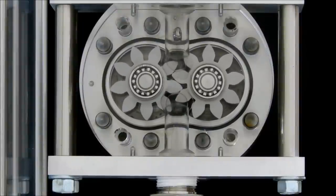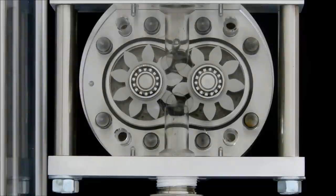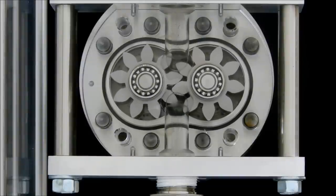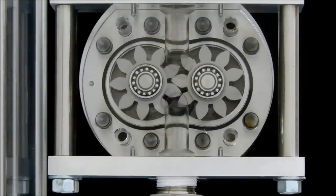As liquid continues to enter the meter, the trapped portion of fluid is carried along by the gears until the fluid is released into the downstream side of the meter. This process repeats itself continuously.